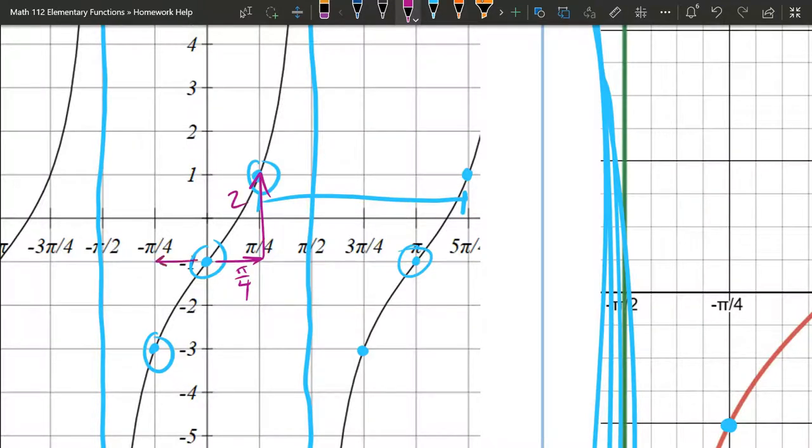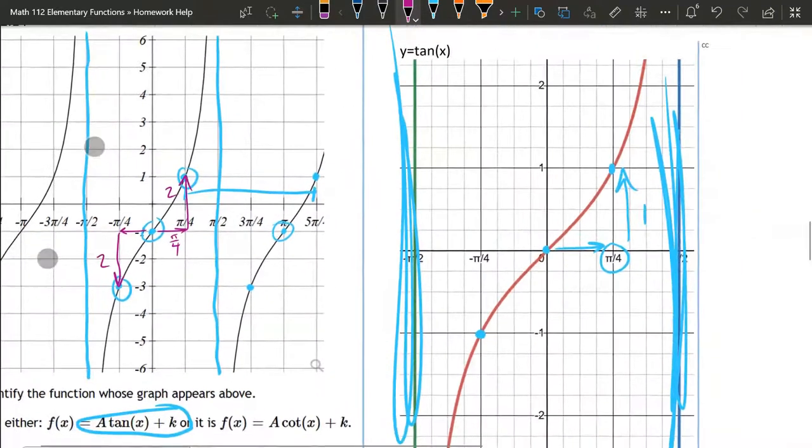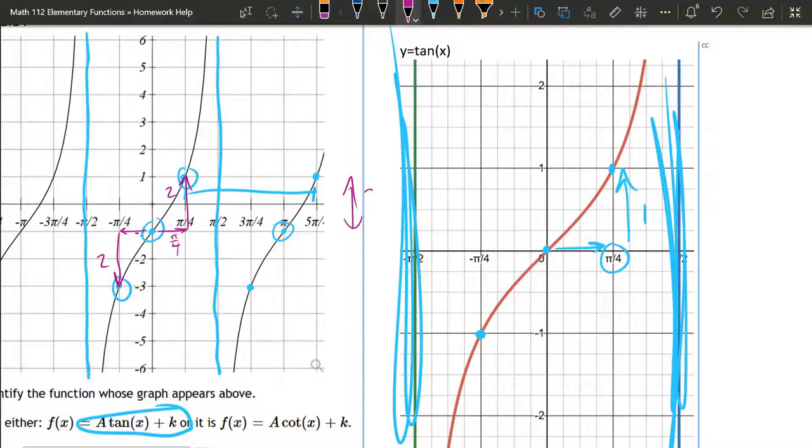Same thing if we go over this way, pi over 4, we're going down 2. So instead of going up 1, we're now going up 2. So this is vertically stretched twice as much as the original.